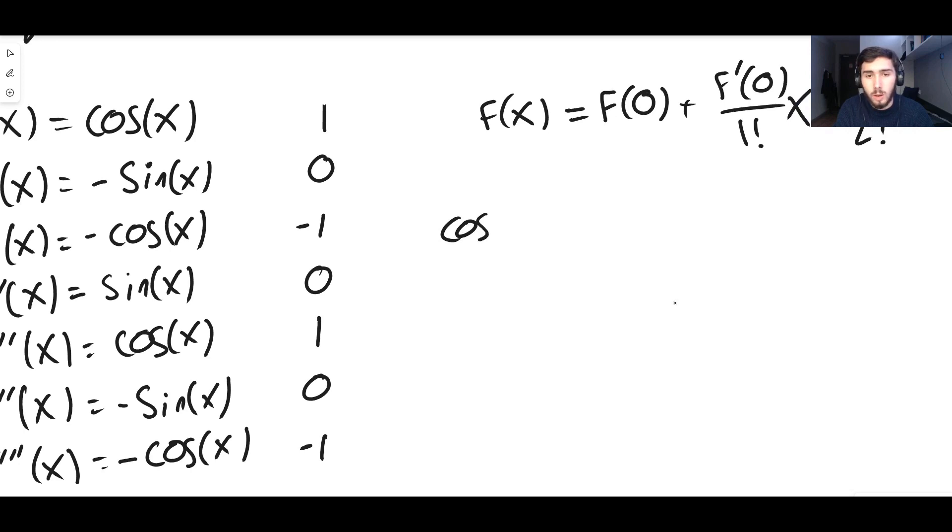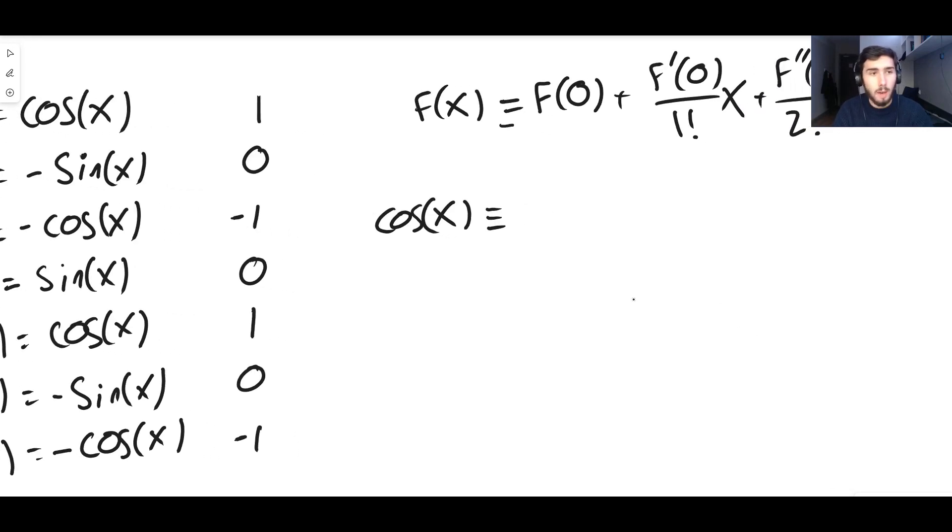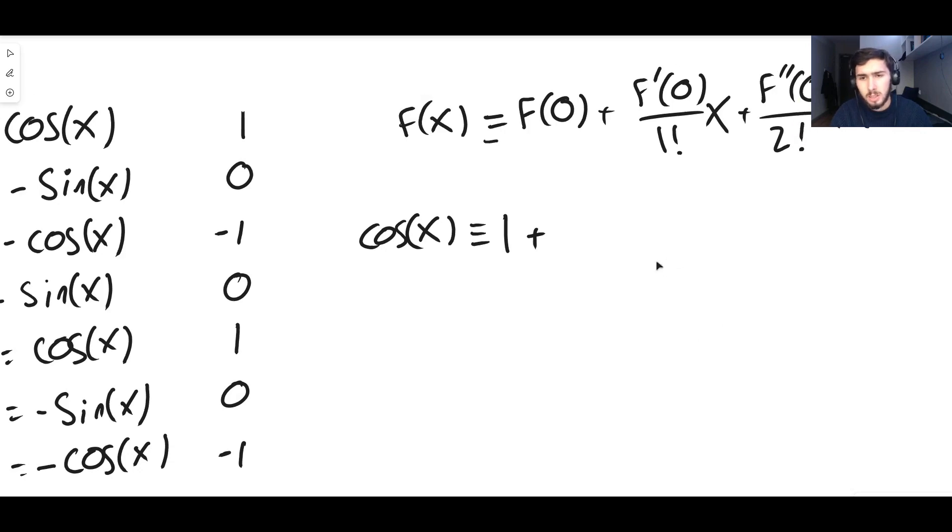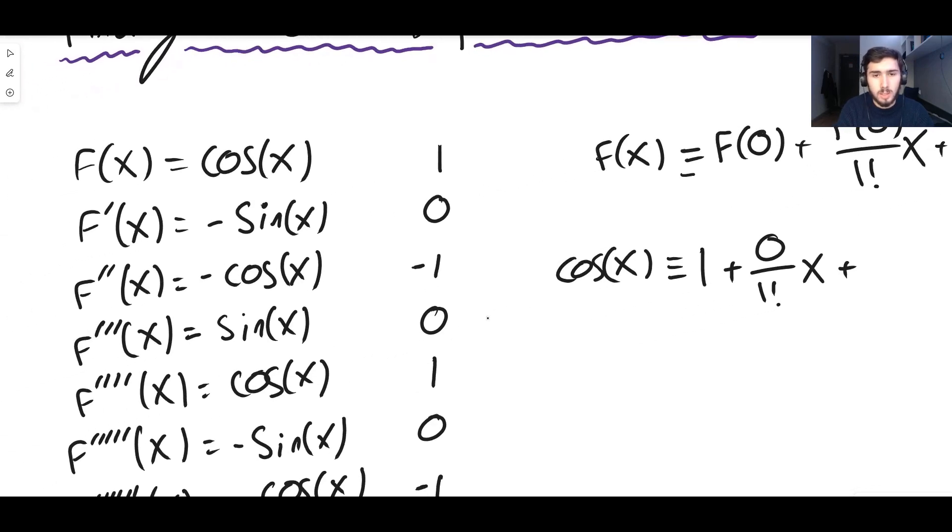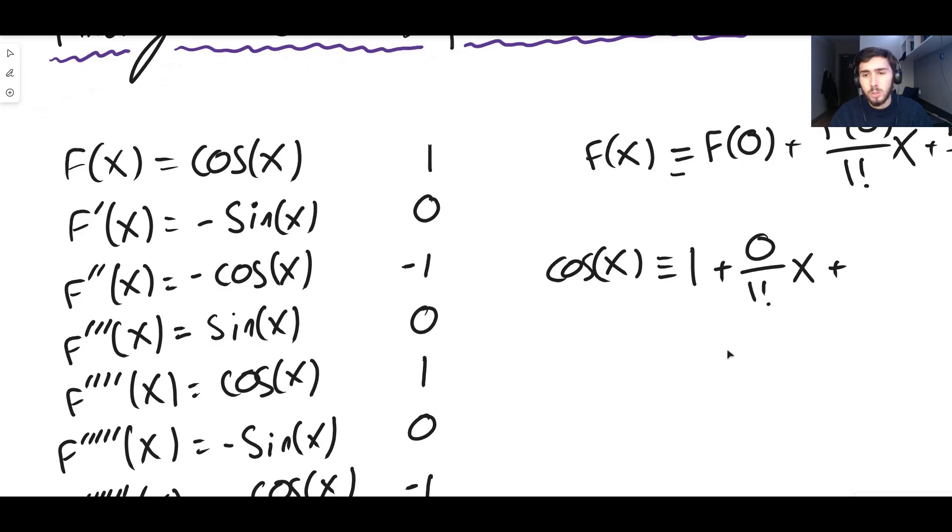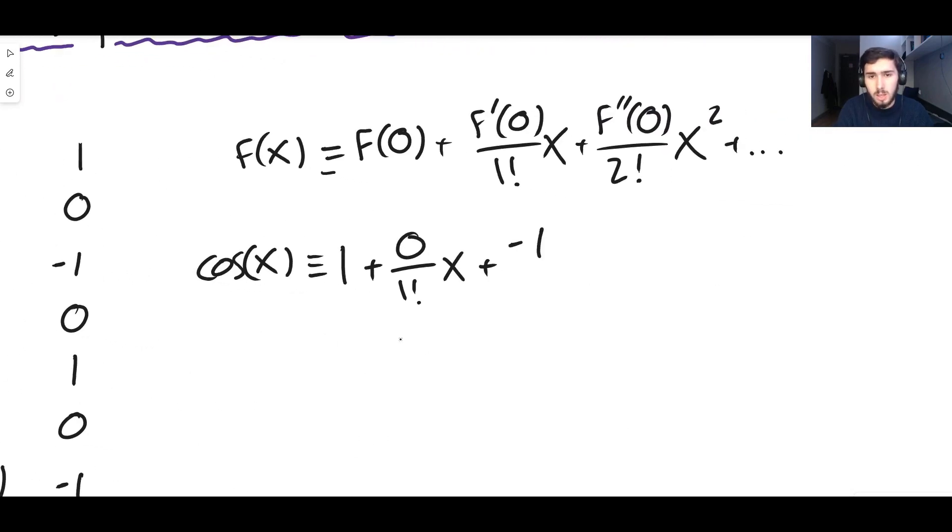So how do we figure out what one for cos x is? Well, we simply substitute. So cos x is identical to f of zero, which is one, plus the derivative evaluated at zero divided by one factorial times x. Well, the derivative evaluated at zero for cos x is actually just zero, divided by one factorial times x. The next term is the second derivative. The second derivative evaluated at zero is minus one. So we put our minus one in, divide that by two factorial times x squared.